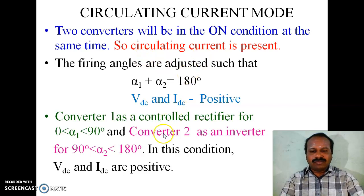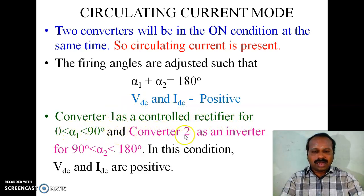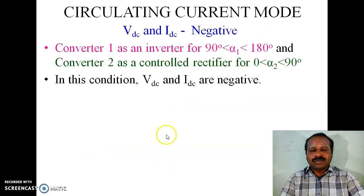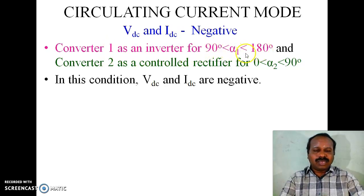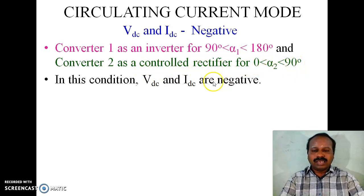For positive values of VDC and IDC, Converter 1 acts as a controlled rectifier for 0 < alpha 1 < 90° and Converter 2 acts as an inverter for 90° < alpha 2 < 180°; in this condition both VDC and IDC are positive. For VDC and IDC negative, Converter 1 works as an inverter for alpha 1 > 90° and Converter 2 acts as a controlled rectifier for 0 < alpha 2 < 90°; in this condition both VDC and IDC are negative.